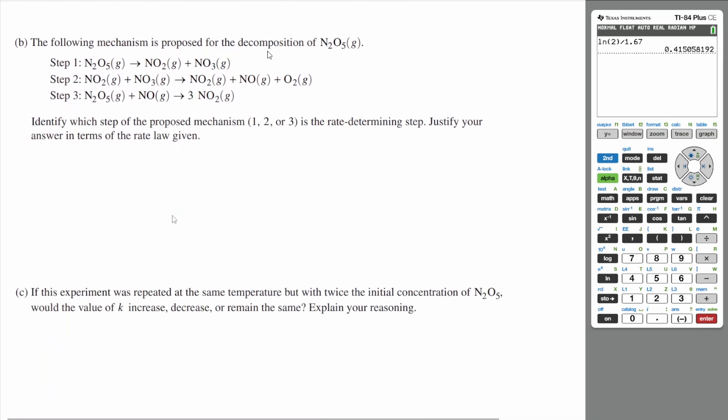The following mechanism is proposed for the decomposition of N2O5. So we have three steps. Identify which step of the proposed mechanism is the rate determining step. Justify your answer in terms of the rate law given. Since these are elementary reactions, we can use the reactants as our rates. So if we write the rate law from step one, let's do step one.